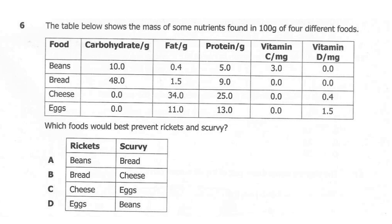The correct answer here is D. For rickets, we need vitamin D. Eggs contain a lot of vitamin D — about 1.35 milligrams. For scurvy, we need vitamin C, and vitamin C is only present in beans, which is about 3.0 milligrams. So for rickets we need eggs, and for scurvy we need beans.